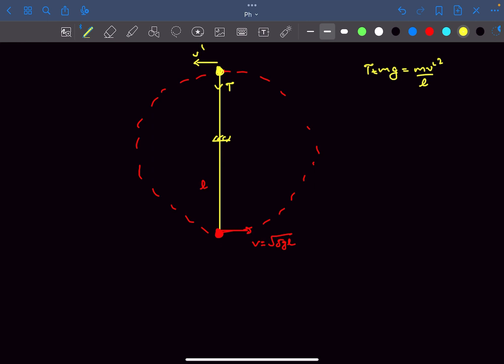And we have to make sure that this tension is some finite quantity. So v dash at the topmost point must be greater than square root gl.